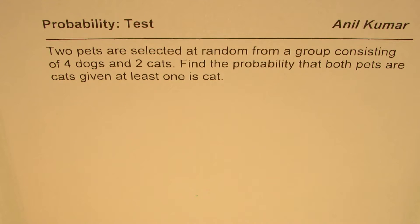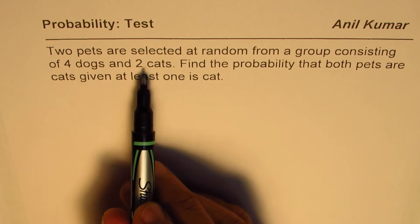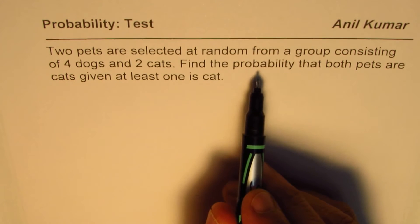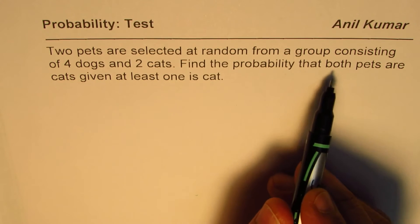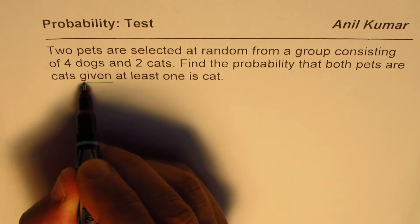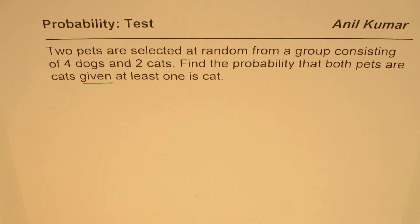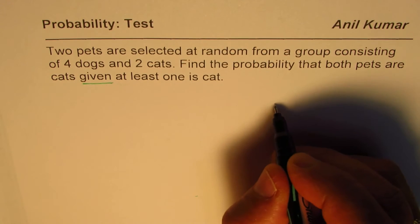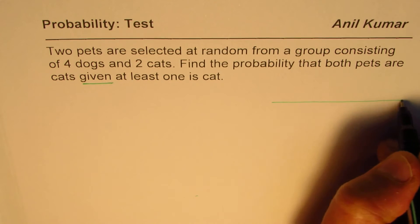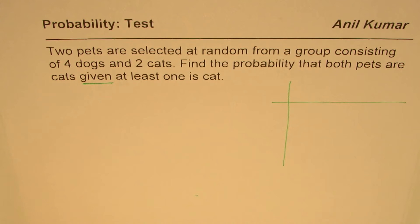Now there are four dogs and two cats. We want to find the probability that both pets are cats — so it's a conditional probability. We are given that at least one is a cat. The method I have adopted here is similar to what we've been doing with a pair of dice.